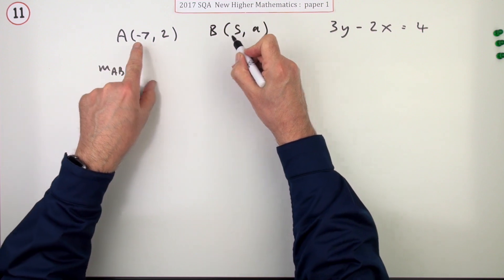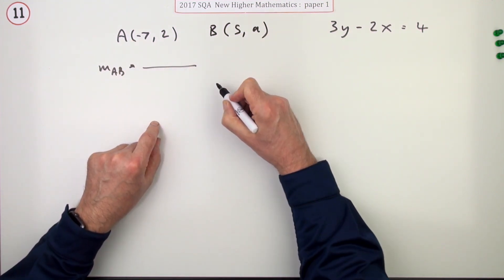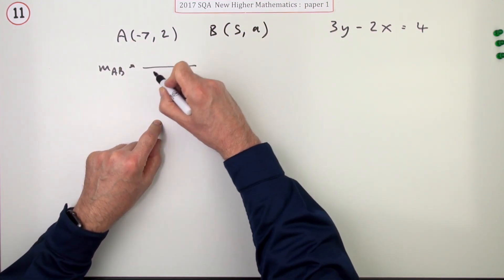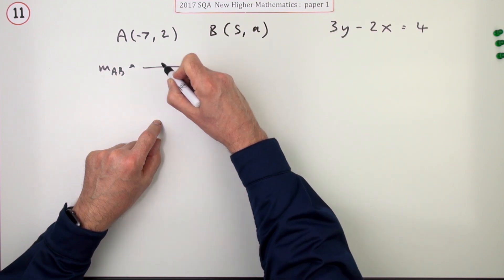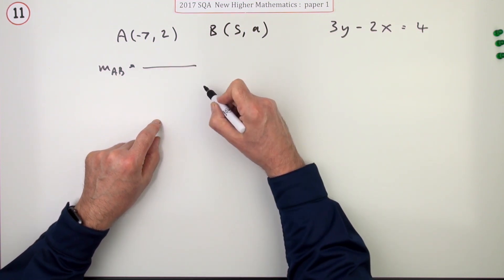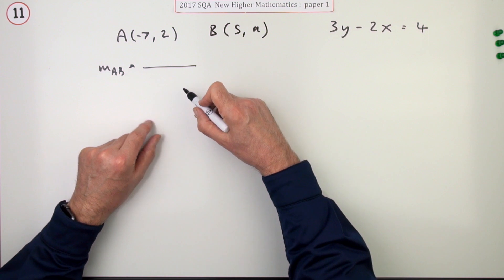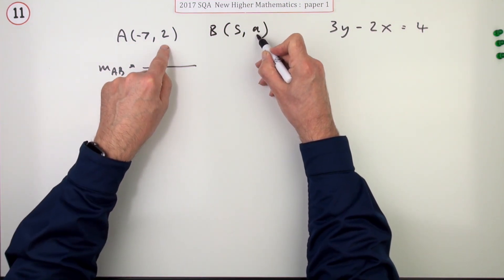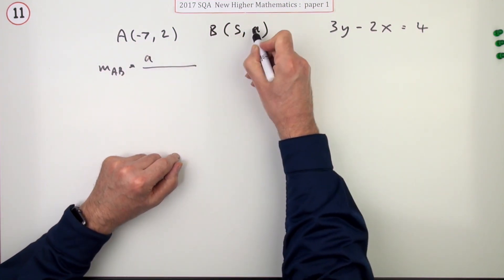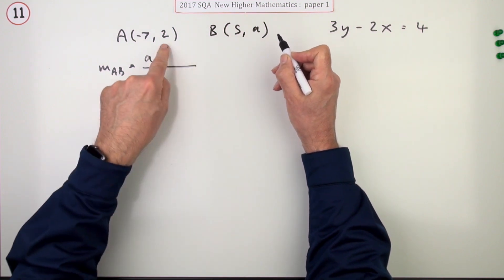Well, it'll be the difference in the y-coordinates over the difference in the x-coordinates. You can write y2 minus y1 over x2 minus x1, or delta y over delta x. It's only one mark in the exam, so I'll just jump straight in with y2 minus y1 since they're staring me in the face here: a minus 2